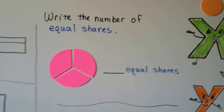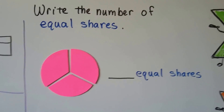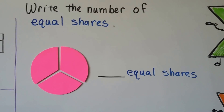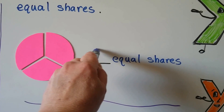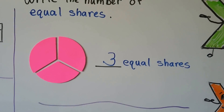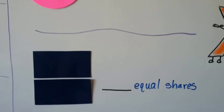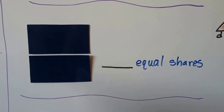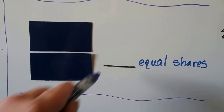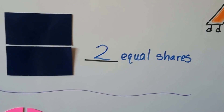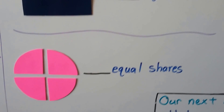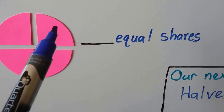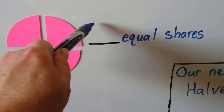Write the number of equal shares. So this is cut into one, two, three pieces — so there's three equal shares. What about this one? How many equal shares are there? We have one, two. What about this circle? How many equal shares are there? We have one, two, three, four equal shares.